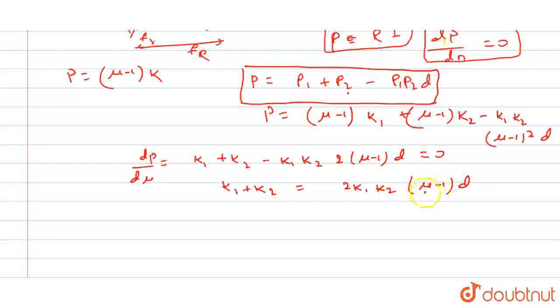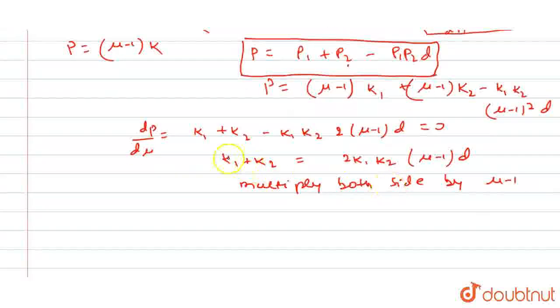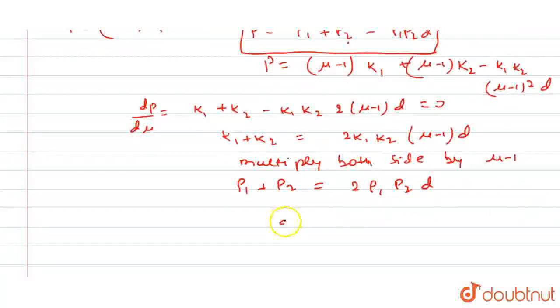If we multiply both sides by mu minus 1, what will it become? k1 into mu minus 1, that is p1, and this becomes p2, equal to 2 p1 p2 into d. From here, d becomes p1 plus p2 divided by 2 p1 p2.